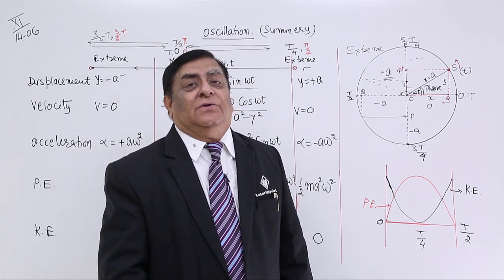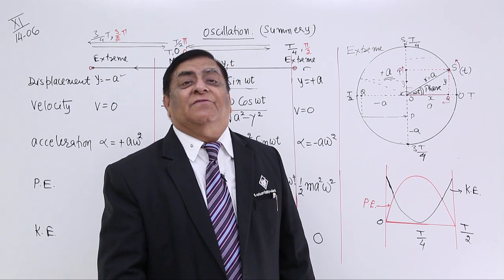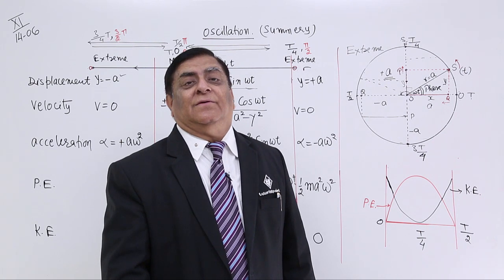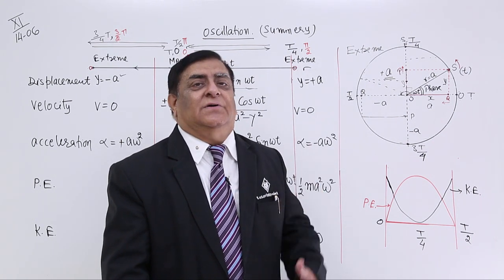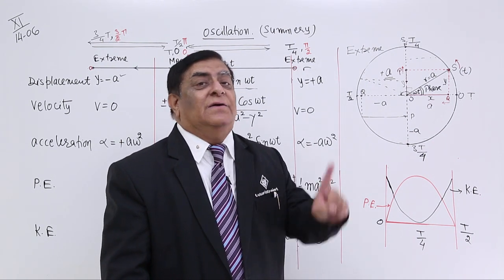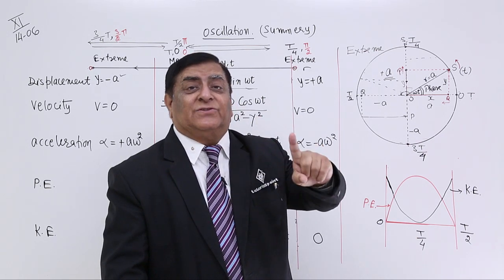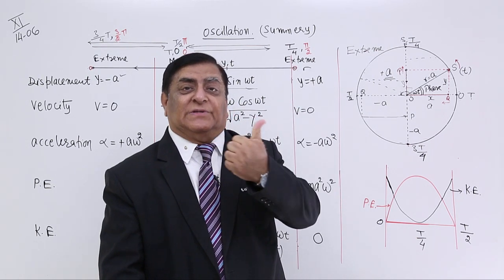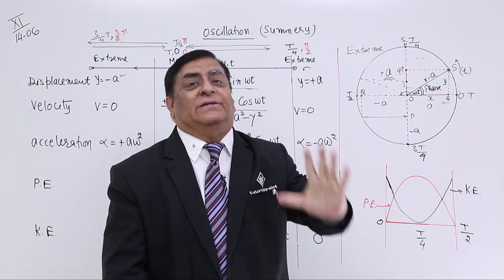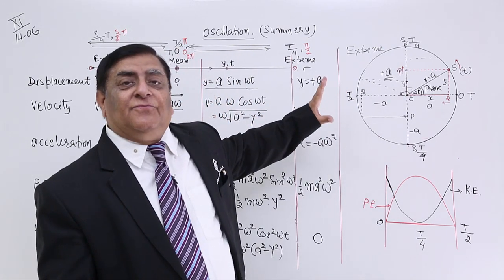For example, if I tell you the phase of a particle is 171π/18, you can find out exactly how many oscillations it has completed, and in the last oscillation whether it is going towards the negative or positive direction and at what point it is. This is the benefit of phase.